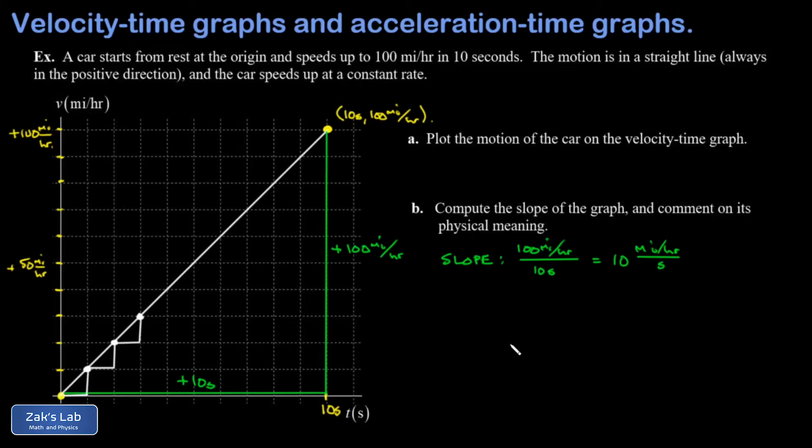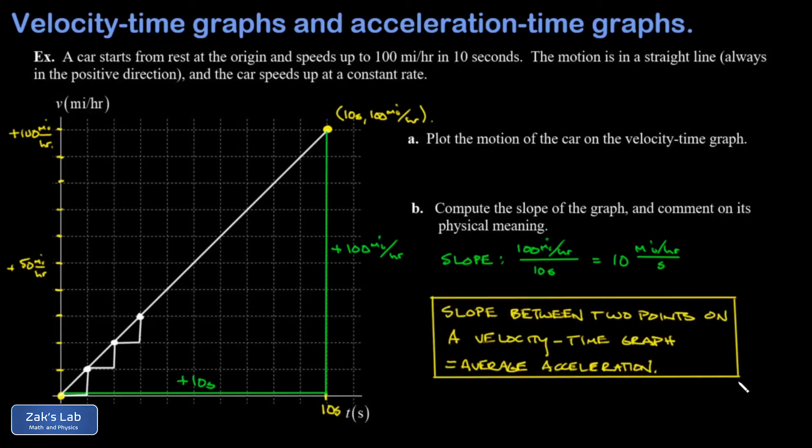And the name for a rate of change in velocity is the acceleration. And we get our first major fact of this video. And this lives in a box because it's so important. The slope between two points on a velocity-time graph gives you the average acceleration.